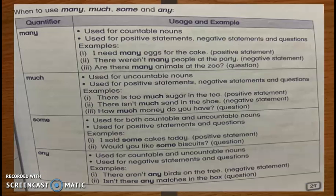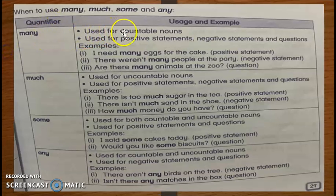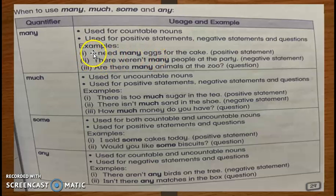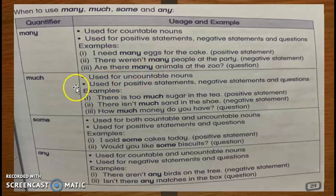Let's look at the details. Many — use for countable nouns. Many hanya untuk benda yang boleh dikira. For example: I need many eggs for the cake — you can count eggs, so we use many. There weren't many people at the party — people boleh dikira, so you use many. Are there many animals at the zoo? Can you count animals? Yes, that's why we use many.